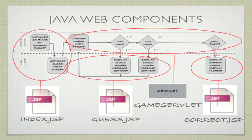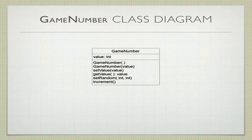On this page we see that there are going to be at least four components in this design pattern. GameServlet and guess.jsp will handle the use cases of guesses that are incorrect. GameServlet and correct.jsp will handle the use cases of guesses that are correct. Let's not forget that we have one other component — that's our game number, our simple plain old Java object, or POJO, that we'll continue to use in this application.